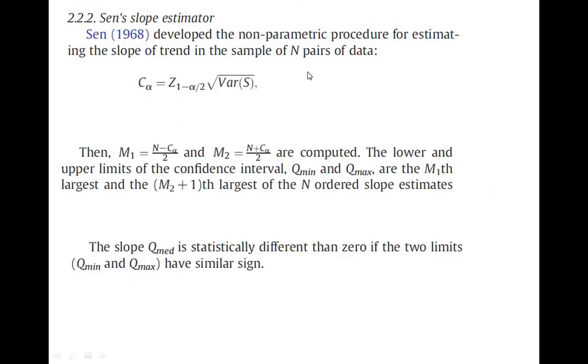Now, after we calculate the median, you find out C alpha. C alpha is Z(1 minus alpha by 2) times the square root of variance S.